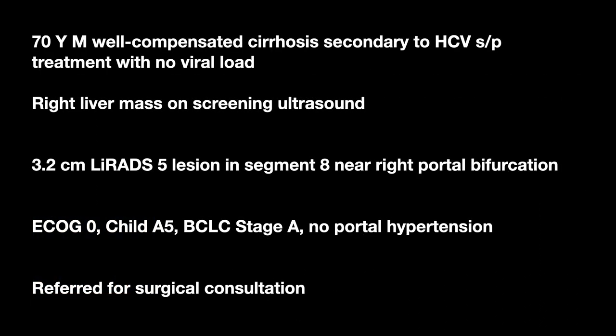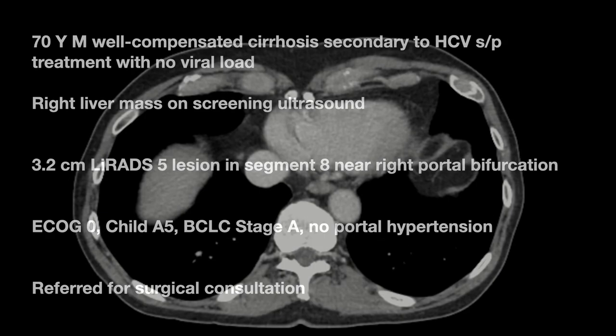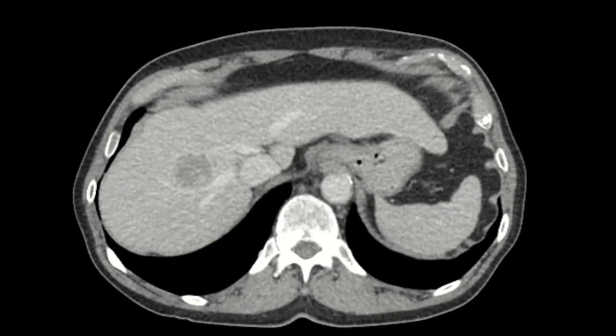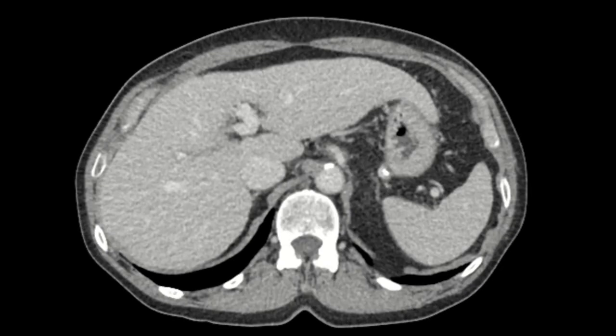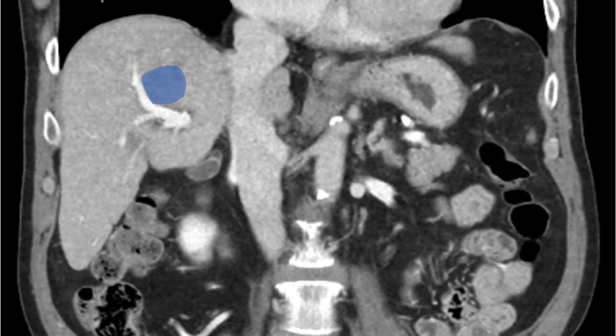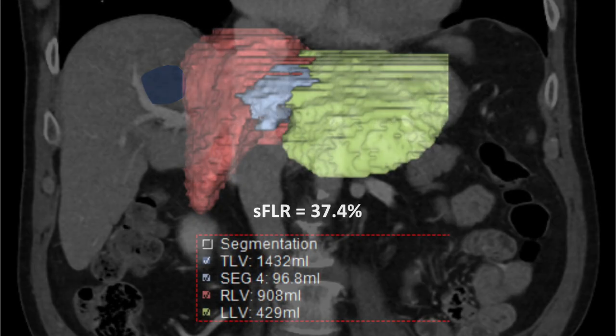The patient is a 70-year-old with a history of hepatitis C who was found to have a liver mass on screening ultrasound. Multi-phase CT scan found a LI-RADS 5 lesion in segment 8 close to the right portal bifurcation. Axial CT shows the mass abutting the right hepatic vein in close proximity to the V8 branch of the middle hepatic vein. On coronal images we can see how close the mass is to the right portal bifurcation, therefore we recommended a right hepatectomy.